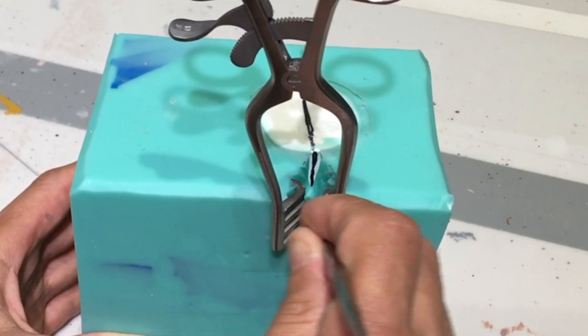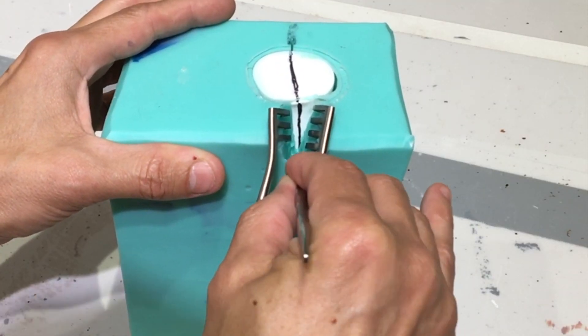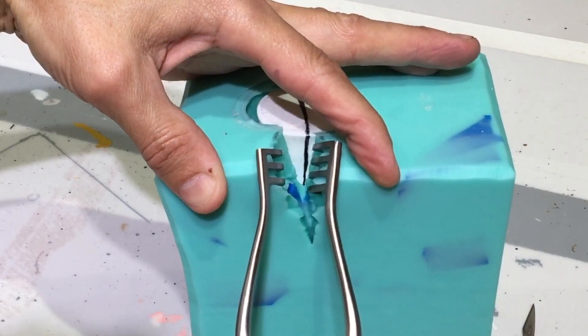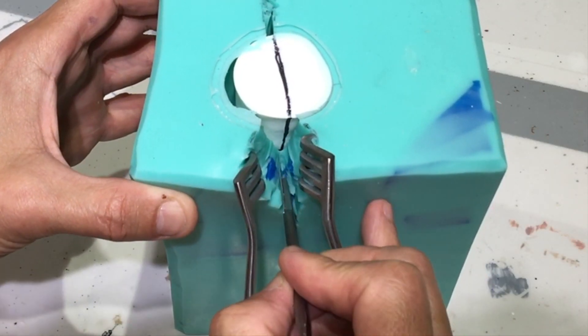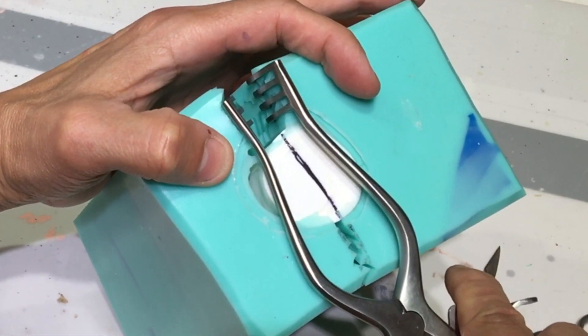And so I just keep working my way down trying to keep the cut straight. And keeping in mind that the cut will curve part way down. Until I feel like I can pull the piece out without tearing the mold or damaging the figure.